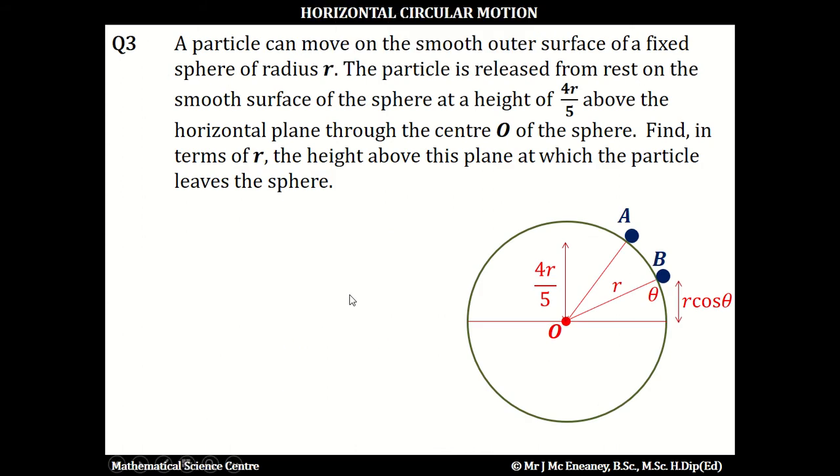Question 3. A particle can move on the outer smooth surface of a fixed sphere of radius R. The particle is released from rest on the smooth surface at the height 4R over 5 above the horizontal plane through the centre of the sphere. Find, in terms of R, the height above this plane at which the particle leaves the sphere.